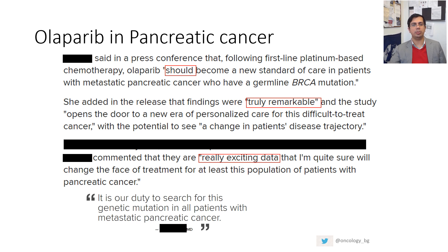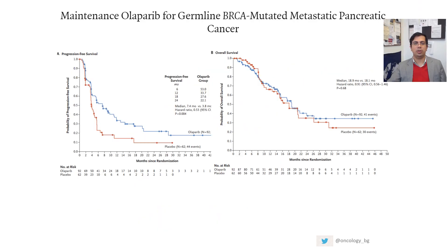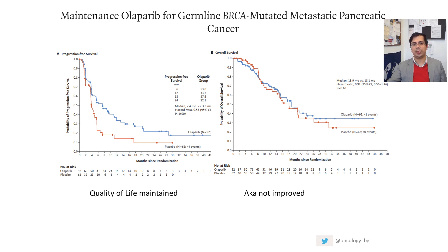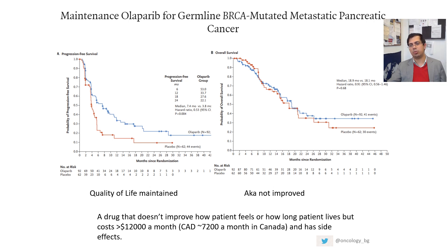In real practice, patients with metastatic pancreatic cancer continue on some form of chemotherapy rather than stopping at 16 weeks and receiving a placebo — which is not the standard of care. When the POLO trial results were published, some experts called olaparib truly remarkable and exciting, but if we look at the data: there is some PFS benefit but overall survival remains the same, with absolutely no difference. Quality of life was reported as 'maintained' — a way of saying it was not improved. So we are talking about a drug that does not improve quality of life or survival but costs nearly $12,000 a month and has side effects.